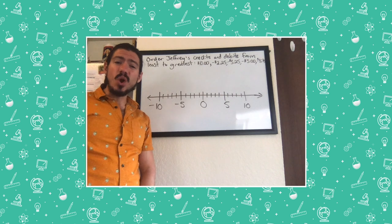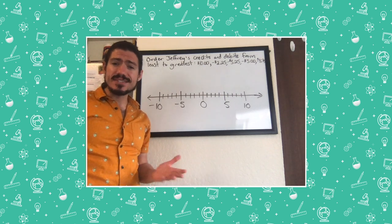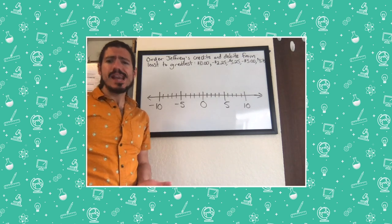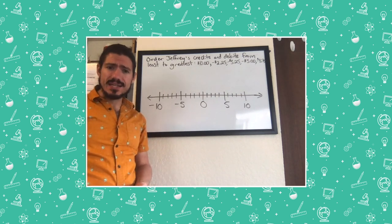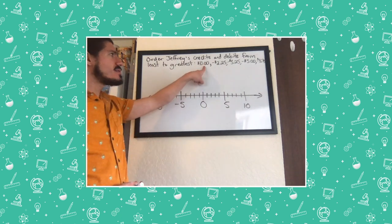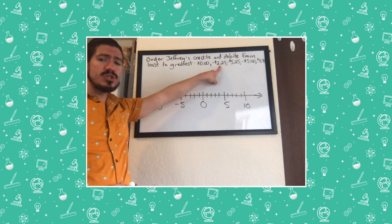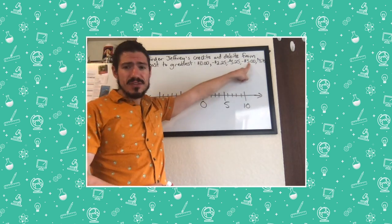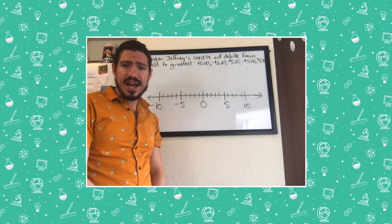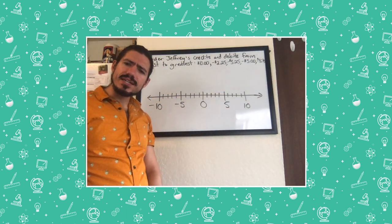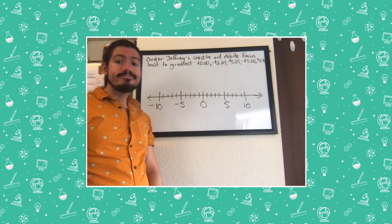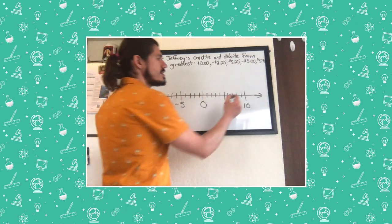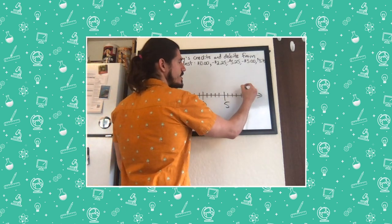Now we're going to help Jeffrey order the credits and debits in his lunch account from least to greatest so that he can understand more about what his lunch account means and how the different amounts are affecting his balance. I have the amounts listed here. $10, negative $2.25, negative $3.25, negative $5, and negative $3.75. Let's start with the greatest. Which of those would be the greatest? Well, it shouldn't be too hard to tell because there's only one positive number up there. So $10 is definitely going to be the greatest.